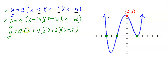Notice that the X intercept negative 4 gives the factor X plus 4 — you just switch the sign. The X intercept negative 2 gives the factor X plus 2. And the X intercept positive 2 gives the factor X minus 2. I highly recommend writing the general formula first, because without it you'll often forget the A piece.